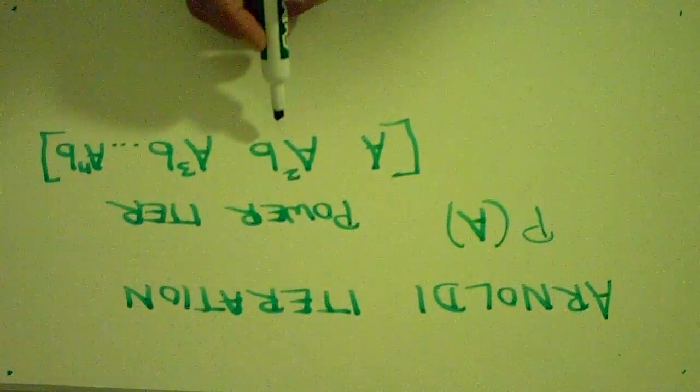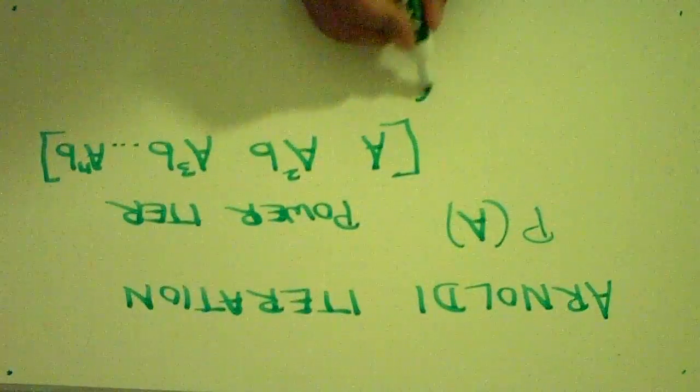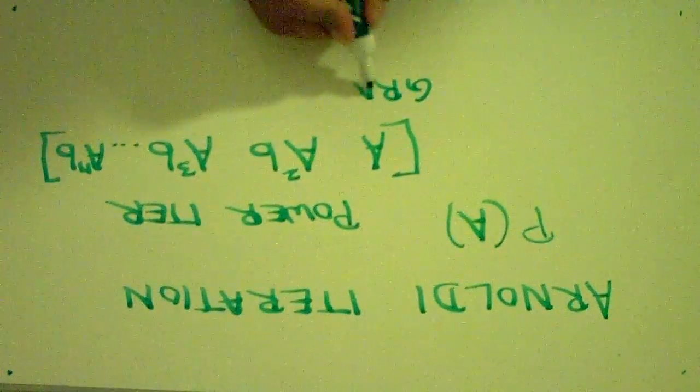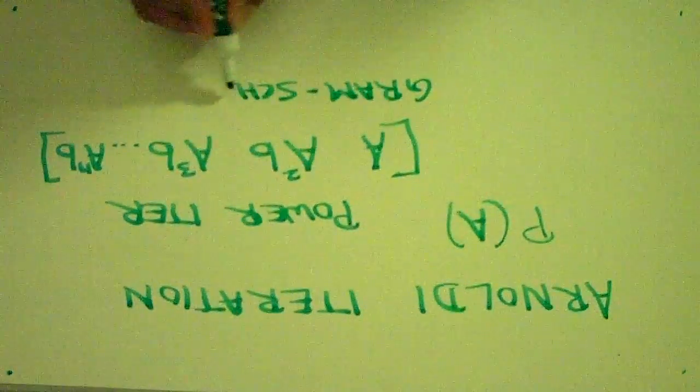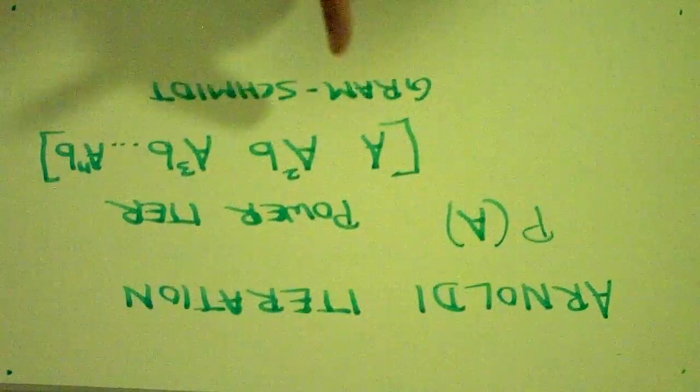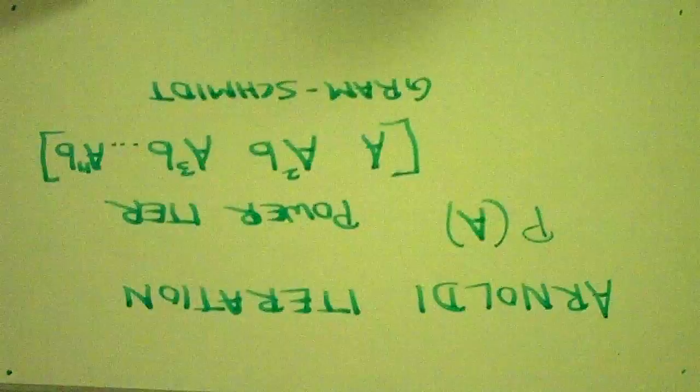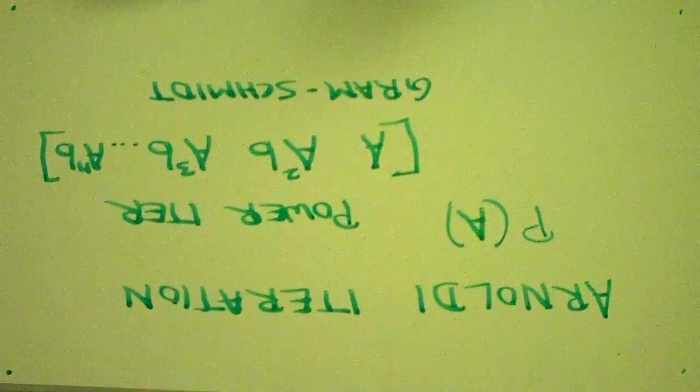How do we ensure that each vector is orthogonal to all the previous vectors? We use a procedure called Gram-Schmidt orthogonalization. The Gram-Schmidt procedure ensures us that, as we proceed, we have orthogonal vectors. So, now let's go ahead and apply the Gram-Schmidt procedure to the power iteration. And that will be the Arnoldi iteration.